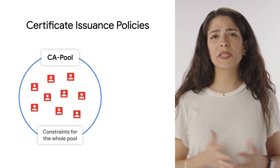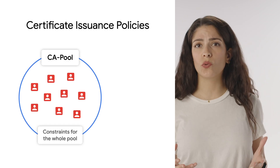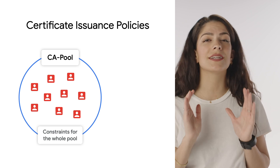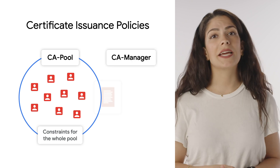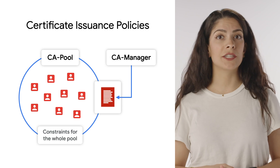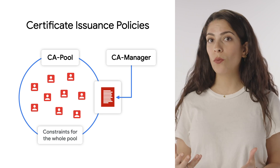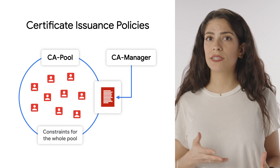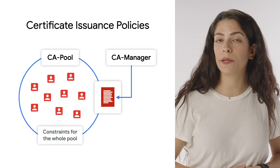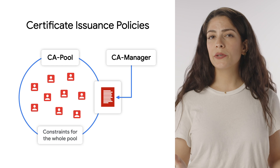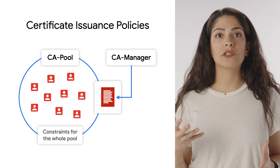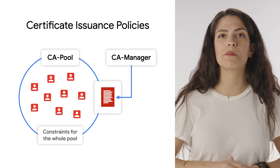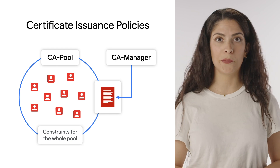Today we'll learn how and when to use a certificate issuance policy. A certificate issuance policy defines controls over all certificate issuance within a CA pool. A CA manager can attach a certificate issuance policy to a CA pool to define restrictions on the kind of certificates that the CAs in the CA pool can issue. You can specify the certificate issuance policy while creating a CA pool or by updating an existing CA pool.